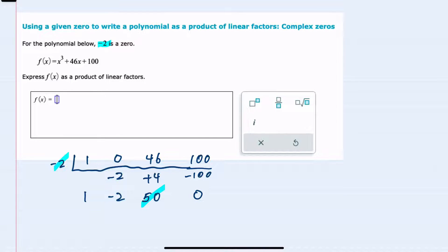And from here, since the minus 2 is a zero, then I can rewrite f of x as x minus a negative 2, or x plus 2. This is the term that will give us a minus 2 as the zero.